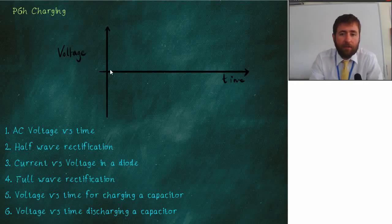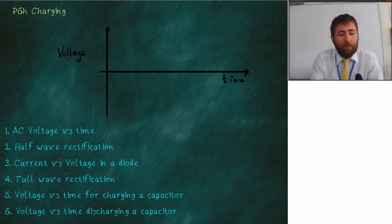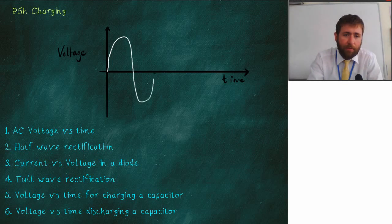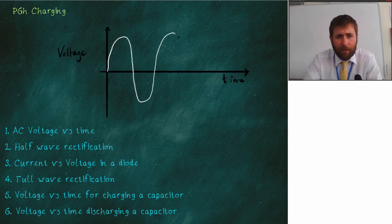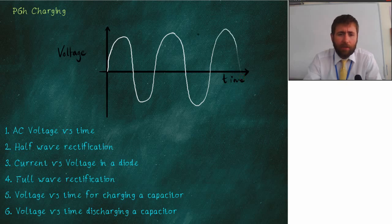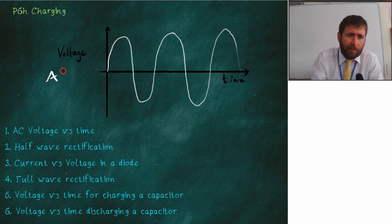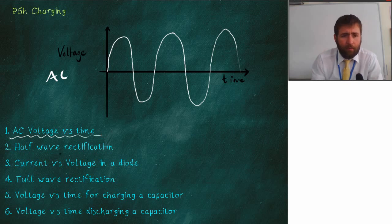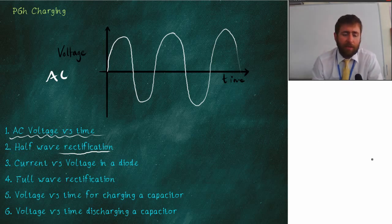Quick run through then of rectification from AC into DC, diodes and how they work, and capacitors — how they work and how we can actually smooth our rectified current. Starting with AC, you need to know the voltage-time graph for AC looks something like this: positive, followed by negative, followed by positive, negative, and then positive again. AC means alternating current. If we want to rectify that, it means change it into just DC — just one direction.